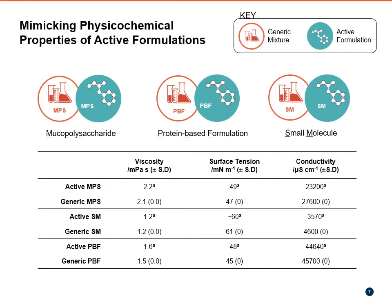To evaluate our new ability to generate generic formulations with whatever physical-chemical properties we wanted, we selected three active formulations — three formulations containing an active drug compound having a range of physical properties. We attempted to mimic those properties using the function discussed on the previous slide. Looking at the table here, the generic formulations demonstrated a fantastic ability to match the properties of their active counterparts, which also allows us to suggest that the active and generic formulations should produce a comparable output rate when nebulized.